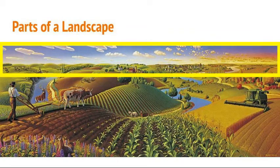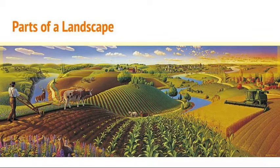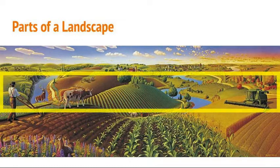This first yellow rectangle is the background. Anything closest to the horizon — those are the things that are farthest away. This rectangle represents the middle ground. You see the farmer, the animals, the combine, and then the field in the distance.